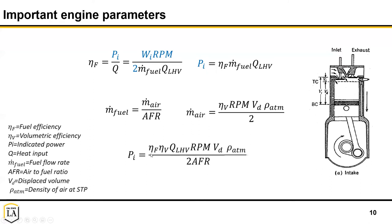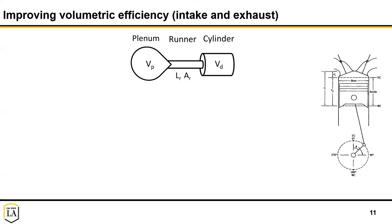We can increase fuel efficiency by limiting heat transfer and increasing the compression ratio. However, be careful — if the compression ratio is too high, you might experience knock. As you compress the mixture, the fuel and air heat up and can begin to combust not at the spark plug but in other areas, which will be really damaging to your engine.